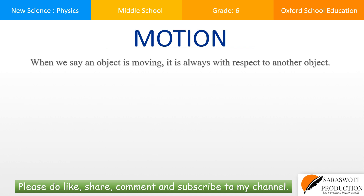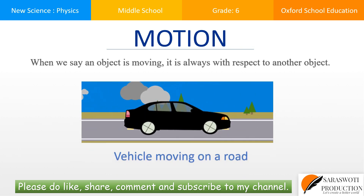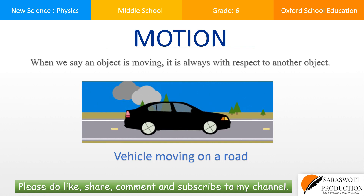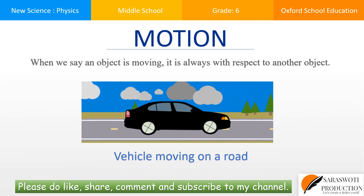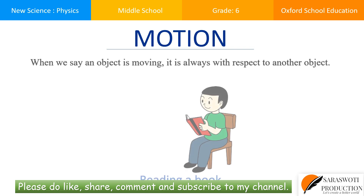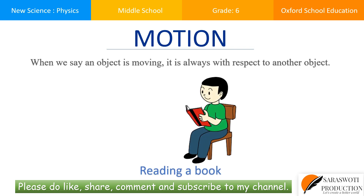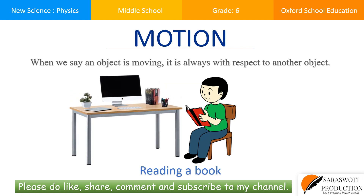Motion. When we say an object is moving, it is always with respect to another object. For example, when we say a vehicle is moving on a road, it is moving with respect to the trees and the poles on the road which are not moving. When you say you are at rest or not moving while reading a book, it is with respect to your chair or your desk.